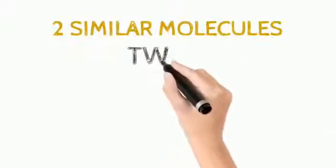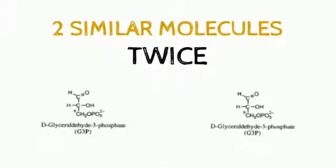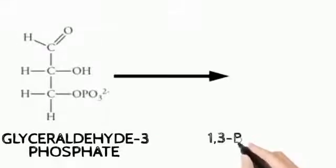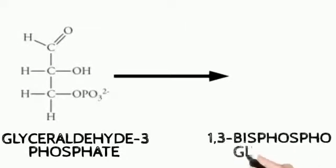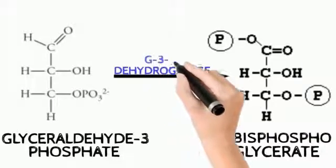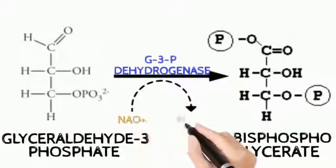At this point two molecules have been generated, so all subsequent steps will happen twice. For the sake of this video we will focus on the single molecule of glyceraldehyde-3-phosphate. In the next reaction, glyceraldehyde-3-phosphate is converted into 1,3-bisphosphoglycerate by the enzyme glyceraldehyde-3-phosphate dehydrogenase.